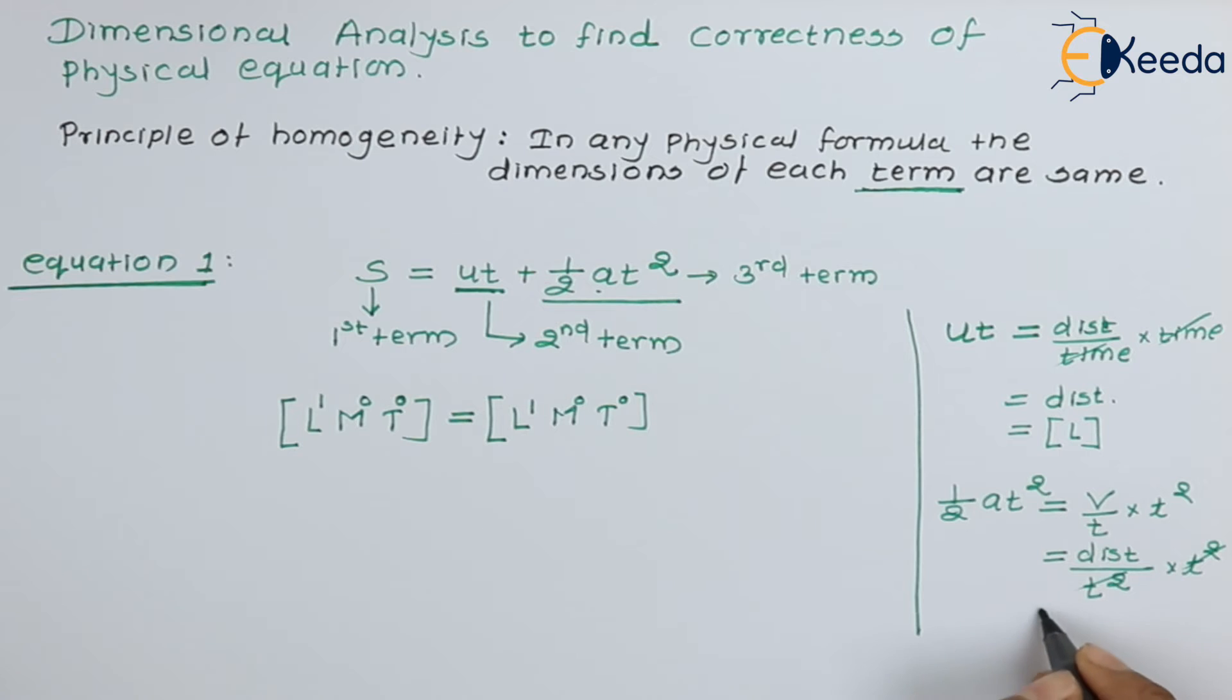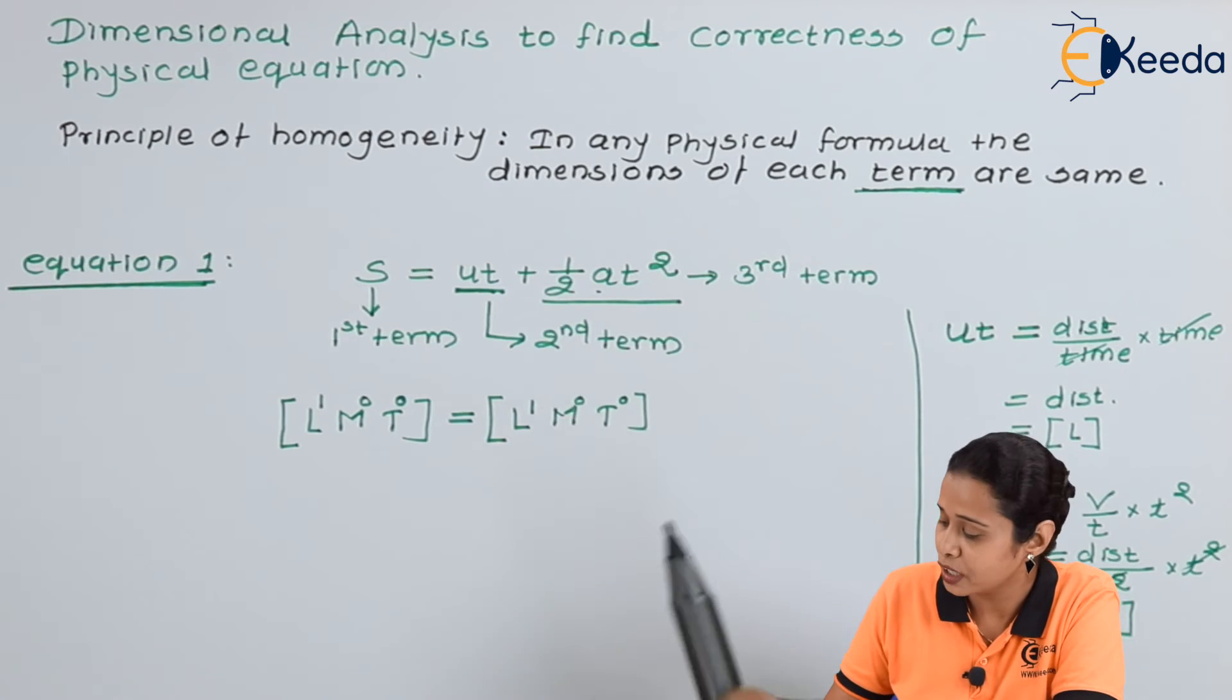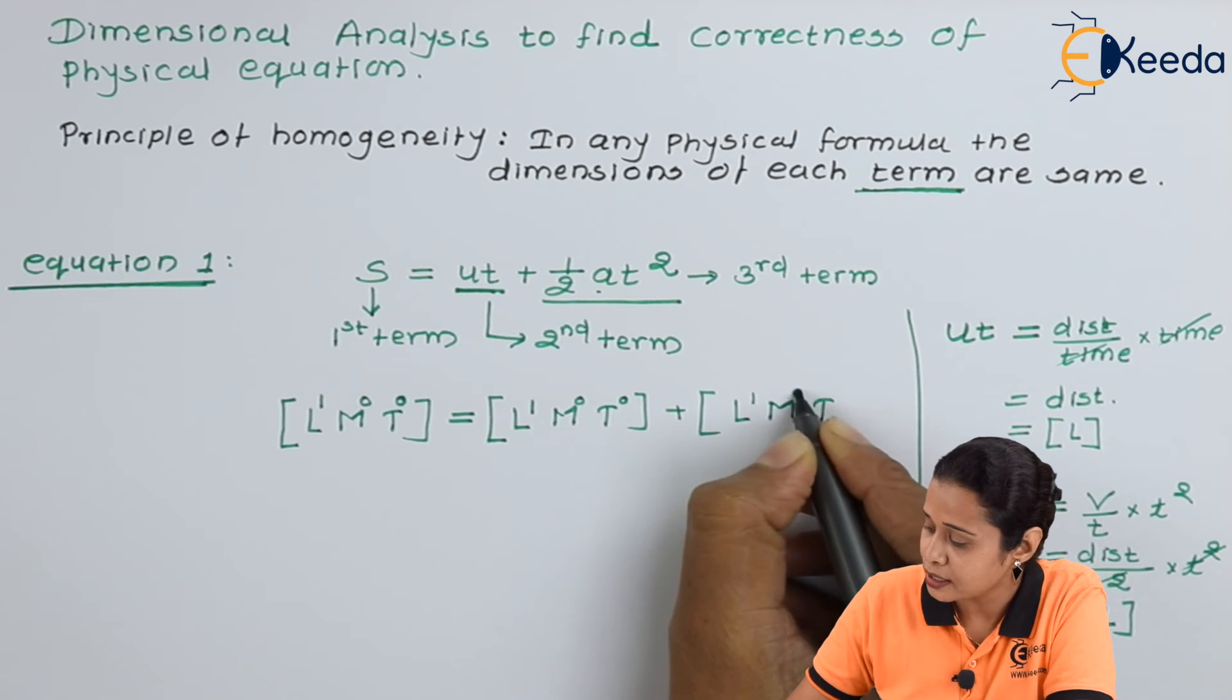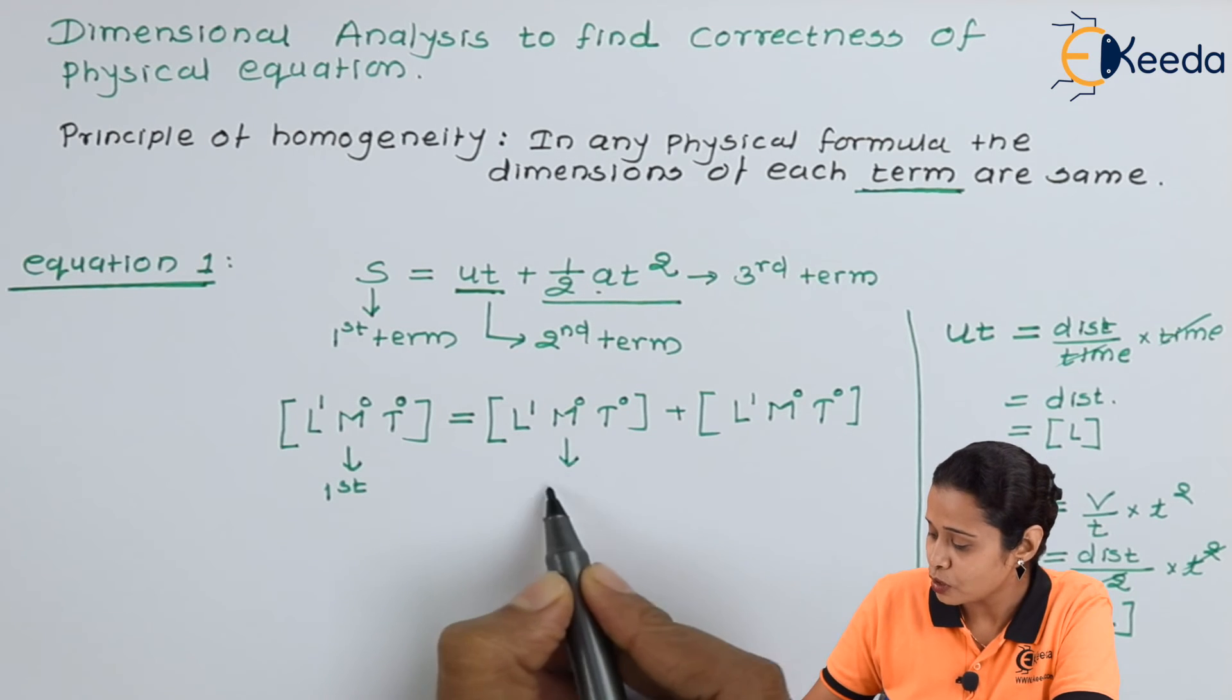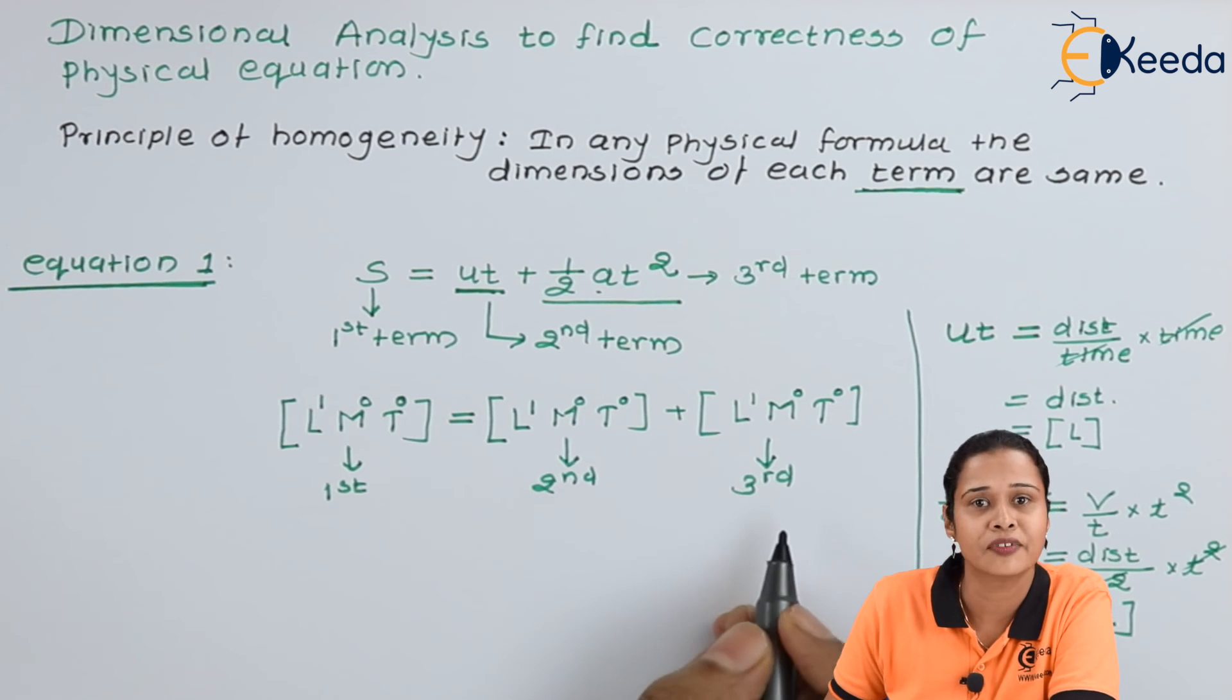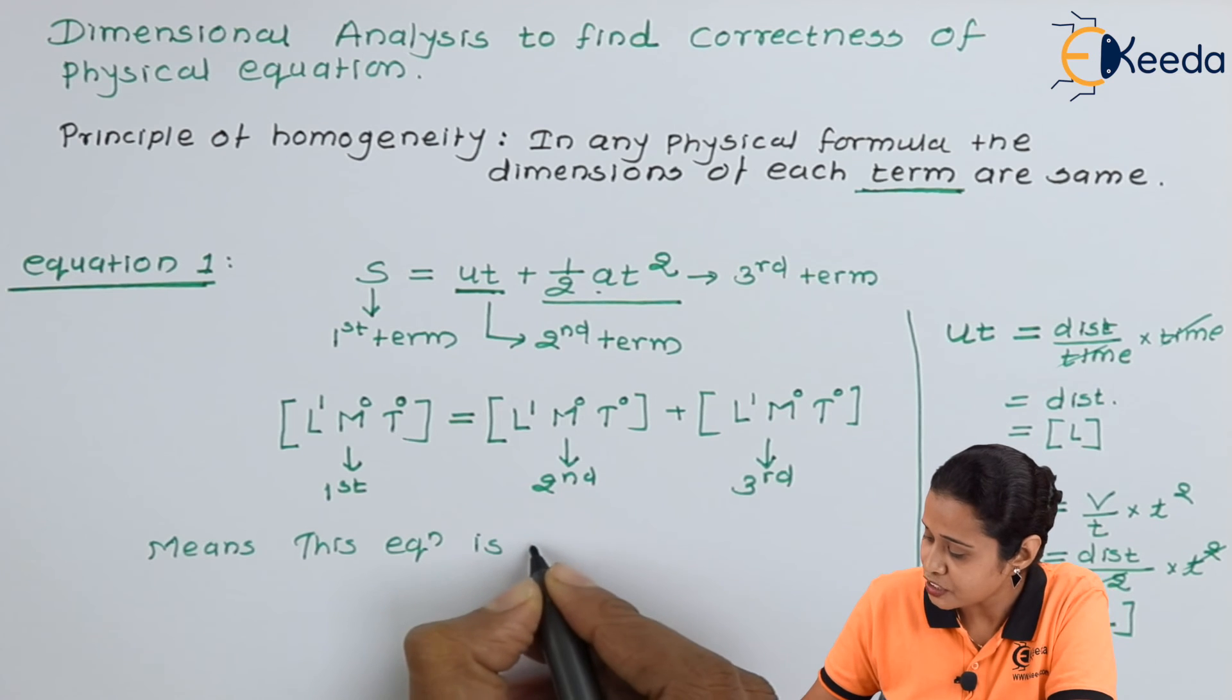Here we have only the quantity that is distance and we know dimension of distance is only L. The dimension of third quantity, third term that is half A, T square will be L1. Again, M and T, both the factors are absent, so this will become 0. If you observe this equation, this is the dimension of first term, this is the dimension of second term and this is the dimension of third term. All three terms having same dimension means this equation is dimensionally correct.